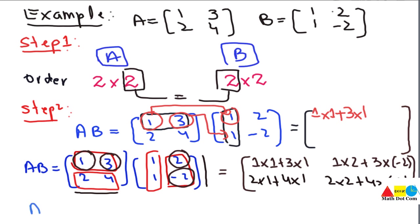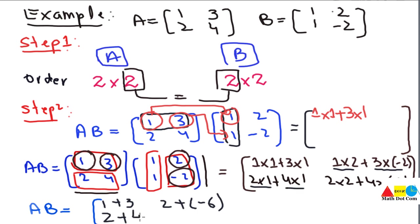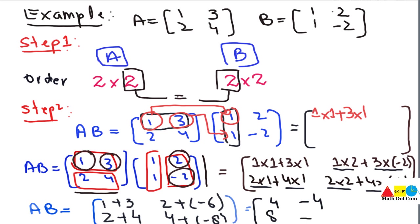The answer: 1×1=1 plus 3×1=3 gives 4. Then 1×2=2 plus 3×(−2)=−6 gives 2−6=−4. Then 2×1=2 plus 4×1=4 gives 6. Then 2×2=4 plus 4×(−2)=−8 gives 4−8=−4. So the product AB equals the matrix with entries 4, −4, 6, −4. This is the answer for the product of A and B.